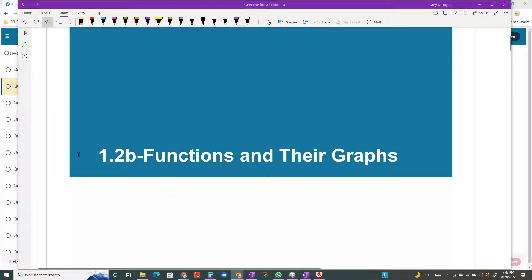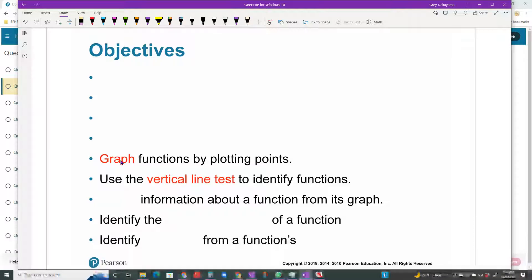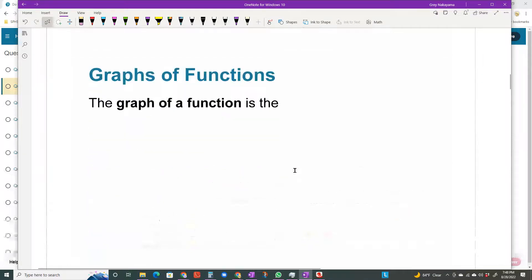Hello there! Today's lesson is 1.2b, Functions and their Graphs. We're going to be concentrating on the graphs of functions. This lesson section is divided into two parts. I talked about the previous parts in another video, but this one is going to concentrate on graphs. We're going to talk about graphing functions by plotting points, using the vertical line test to identify functions, obtaining information about a function from its graph, identifying the domain and range of a function from its graph, and then identify intercepts from the function's graph. In case you can't tell, you need to be able to read graphs of functions.